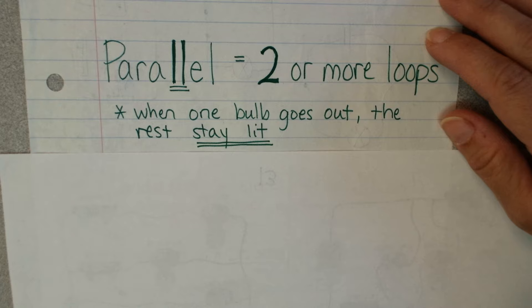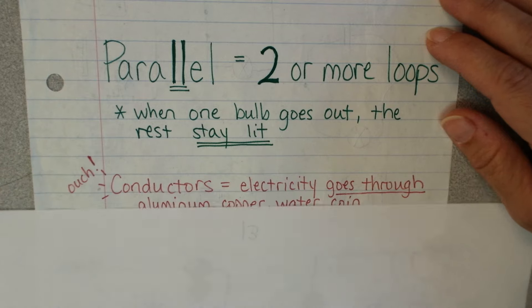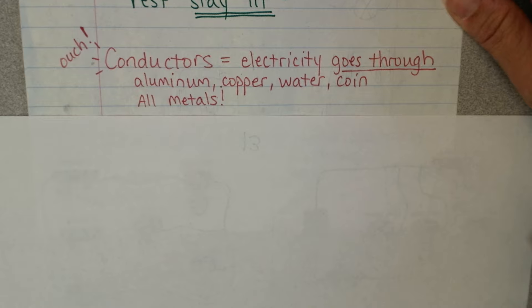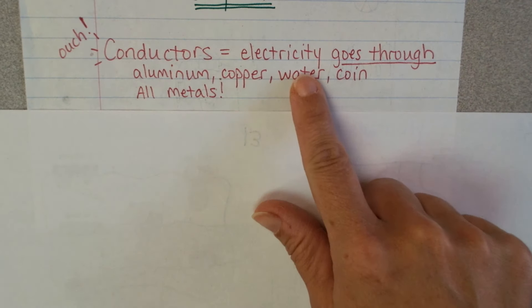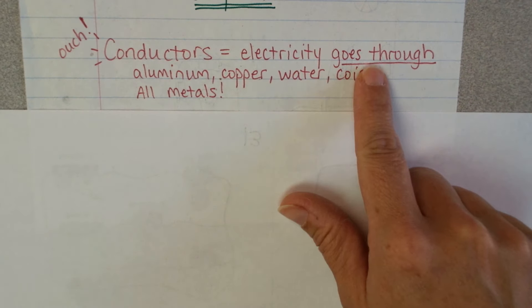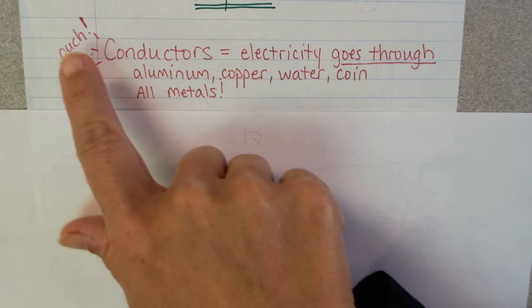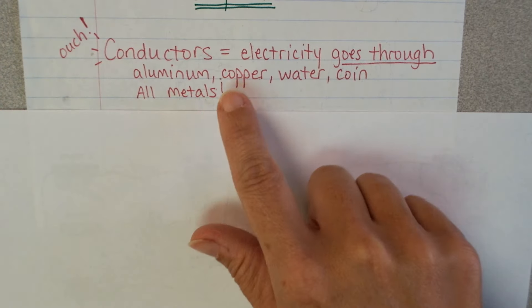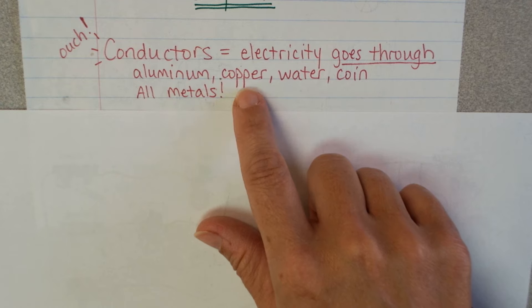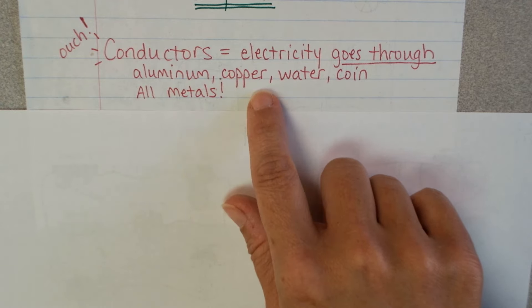So some other reminders here, conductors. Remember conductors are what are going to allow the electricity to go through. And these are the things that would shock you, right? And so pretty much all metals, aluminum, copper, coins, you're going to see those as a lot of answer choices on things.